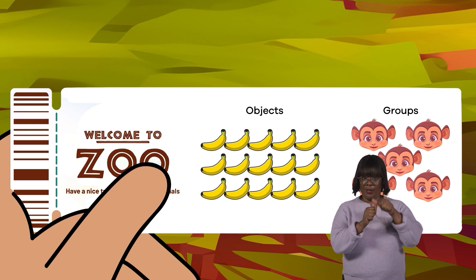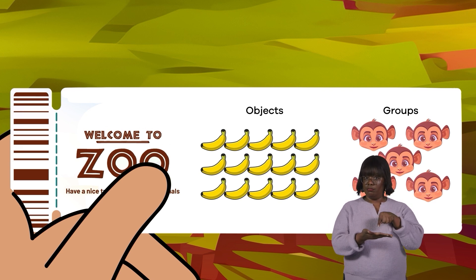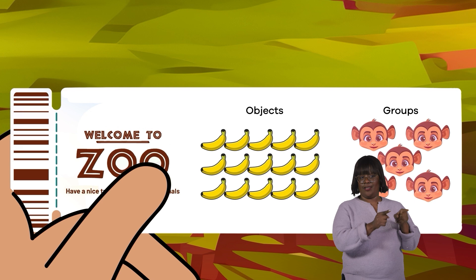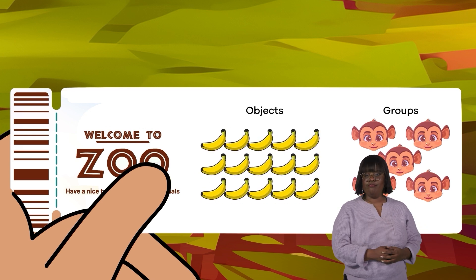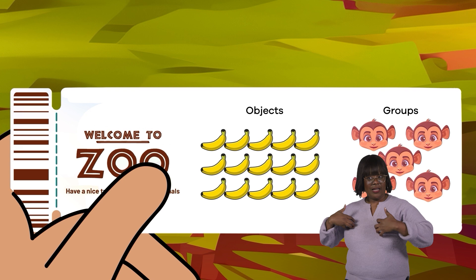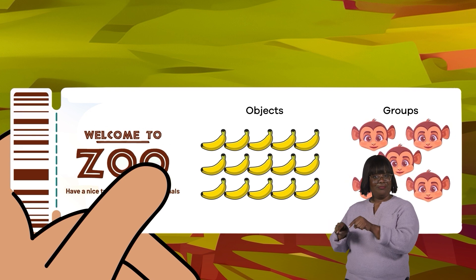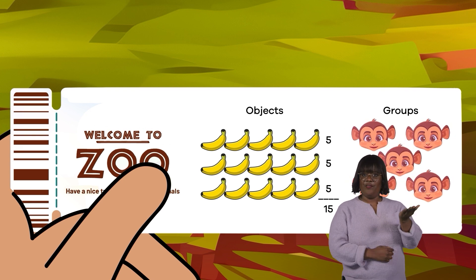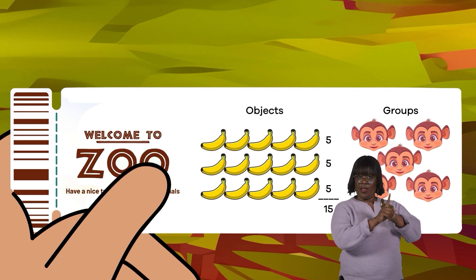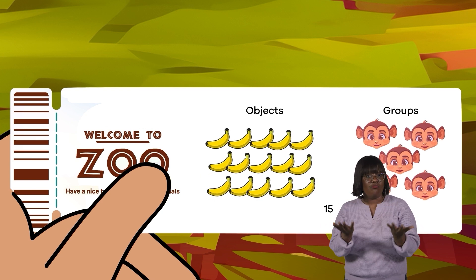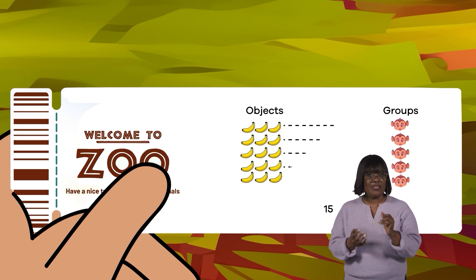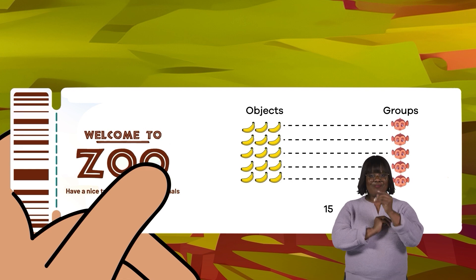Remember that when you write a division problem, you start with the number of objects. Bananas first, and then the number of groups, monkeys, next. So, 15 bananas divided by five monkeys equals? If you said three, you're right!